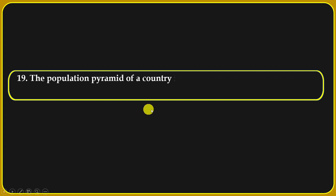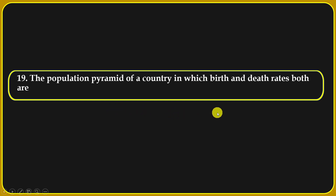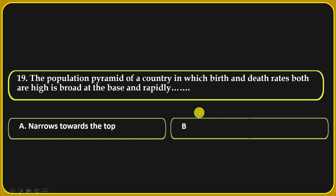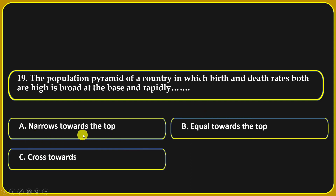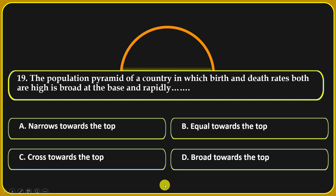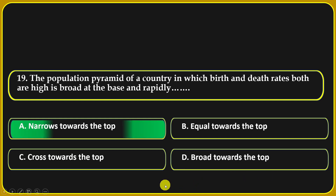The population pyramid of a country in which both birth and death rates are high is: broad at the base and rapidly narrows toward the top, equal toward the top, crosses toward the top, or broad toward the top. Narrows toward the top is the correct answer.